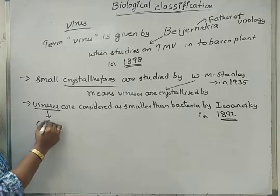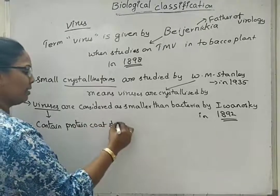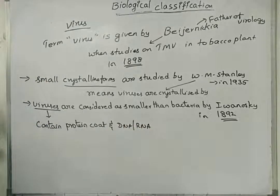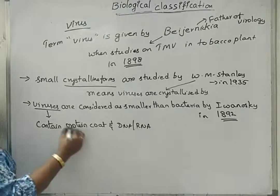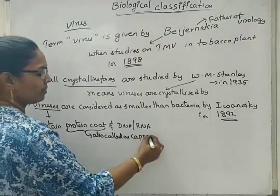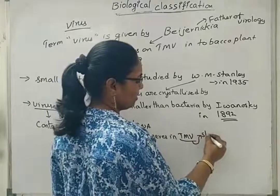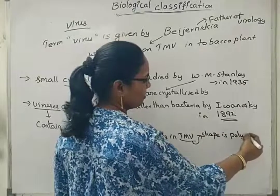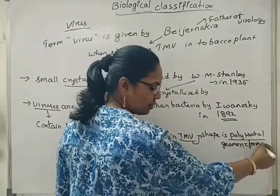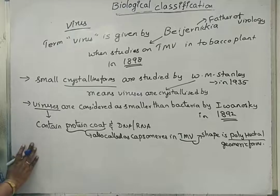Viruses contain a protein coat and DNA or RNA only. Only these two types of biomolecules are present in case of viruses. The protein coat is also called as capsomere. In TMV virus, the shape is polyhedral or geometric forms.